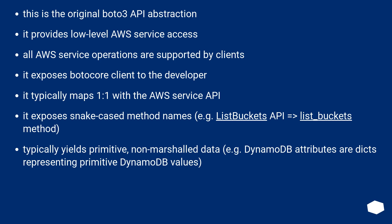Client. This is the original Boto3 API abstraction. It provides low-level AWS service access. All AWS service operations are supported by Clients. It exposes the botocore Client to the developer. It typically maps one-to-one with the AWS service API. It exposes snake-cased method names — for example, the ListBuckets API maps to the list_buckets method.